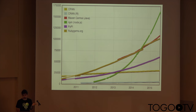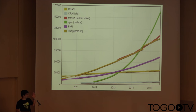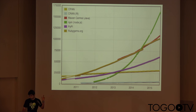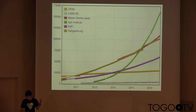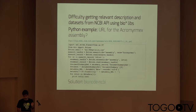Another cool thing with Node.js is that it's the fastest-growing community right now. You can see in green the number of Node.js modules growing exponentially. In the middle you have Python and Ruby, and R at the bottom. Although there are not a lot of bioinformatics modules in Node.js yet.